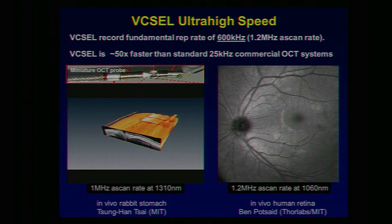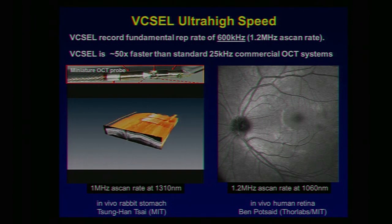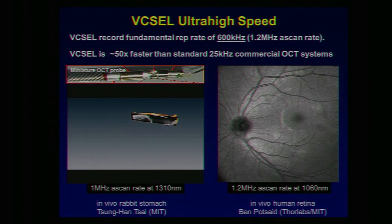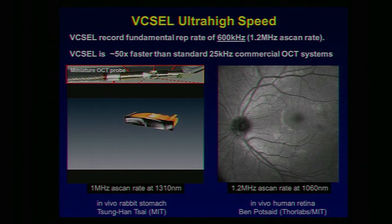High speeds are important in OCT. We have a record fundamental rep rate of 600 kilohertz, giving a 1.2 megahertz A scan rate — about 50 times faster than standard commercial OCT systems. Using a miniature OCT probe and a 1310 nanometer VIXEL at 1 megahertz A scan rate, we imaged the in vivo rat stomach, where you can see stomach muscles contracting. We also used a 1060 nanometer VIXEL — more appropriate for ophthalmic imaging — to image the retina at 1.2 megahertz, crucial since patients only give you a few seconds before they blink or avert their gaze.